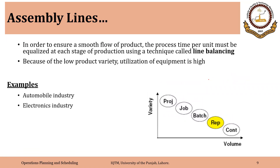In order to ensure a smooth flow of product, the process time per unit must be equalized at each stage of production using a technique called line balancing. Practically, this is not easy to achieve and requires some iterations and application of different tools of lean manufacturing and process design, but that is the ultimate goal of line balancing.